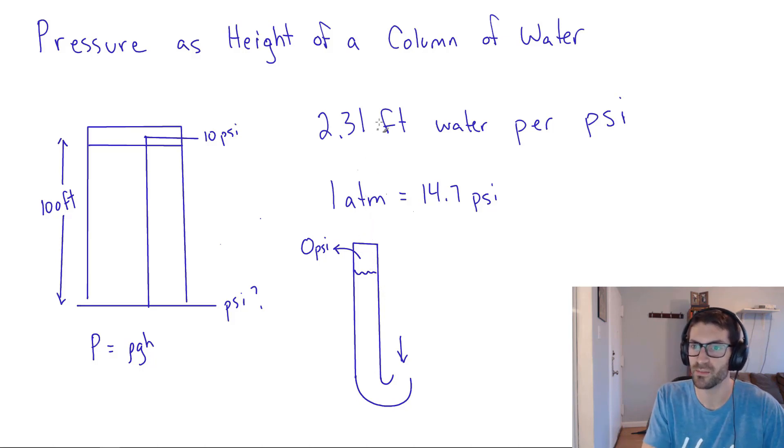And we can calculate how high by multiplying the atmospheric pressure by 2.31. And if you do that, 2.31 feet per psi times 14.7 psi, that equals approximately 34 feet. And I think that's handy to know that atmospheric pressure is about equal to 34 feet of water. So those are roughly equivalent amounts of pressure.